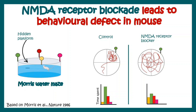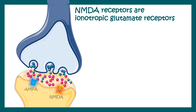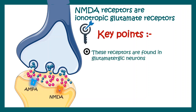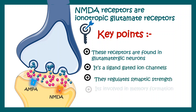NMDA receptor blockade also leads to behavioral defects in mice. In a behavioral task known as the Morris Water Maze, a mouse has to find a hidden platform in a tub, locating it using visual landmarks. With training, a control mouse can do this task very nicely, going directly to the quadrant with the visual landmark and hidden platform. But when the NMDA receptor is blocked, this task is totally disrupted — the mouse cannot perform it anymore. This means NMDA receptors are associated with memory formation. In summary, NMDA receptors are ionotropic glutamate receptors found in glutamatergic synapses; they are ligand-gated ion channels that regulate synaptic strength and are involved in memory formation.